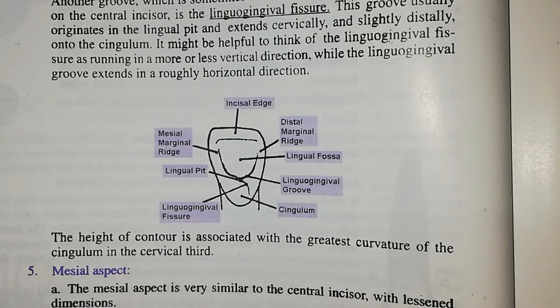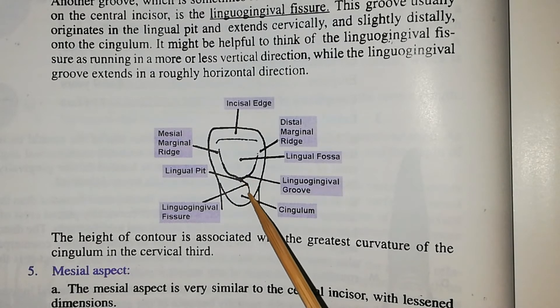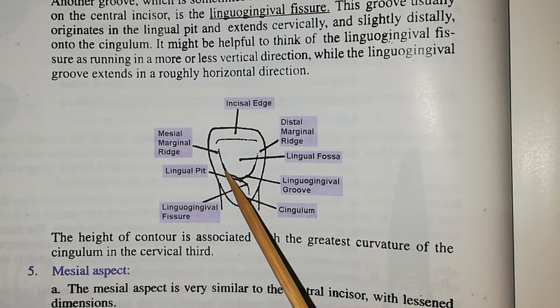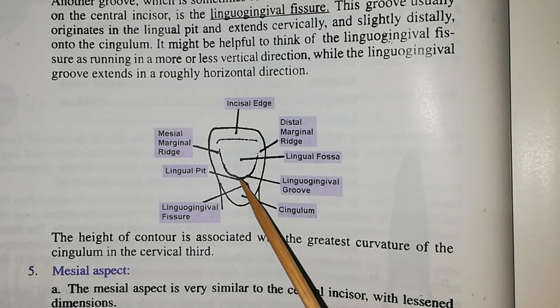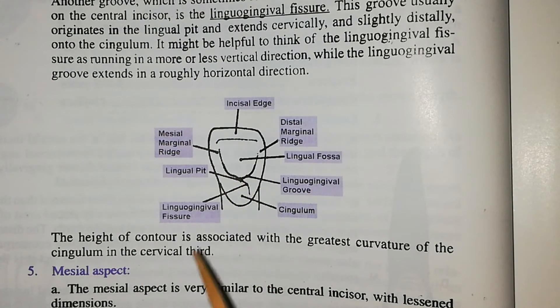The height of contour is located in the cervical third. Here in this diagram, this is the lingual gingival fissure, this is the lingual gingival groove, and this is the lingual pit. The lingual pit is a potential site for caries.